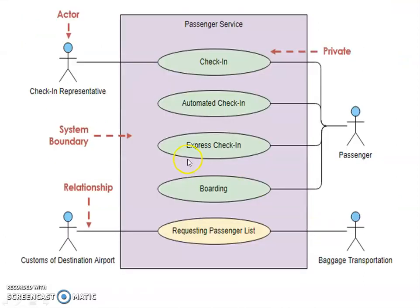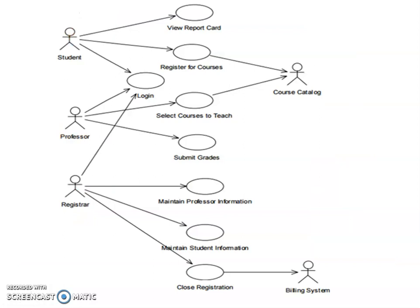Here is another example, passenger service system. The actors are check-in representative or check-in inspector, then custom officer or customs of destination airport, and passenger baggage transportation. Here five use cases: check-in, automated check-in, express check-in, boarding, requesting passenger list. This private indicates that the check-in inspector can only check-in this one, check-in information. The passenger can do these four use cases. And the customer officer can request the passenger list who are having baggage transportations.